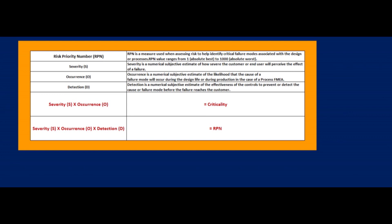Detection is the numerical subjective estimate of the effectiveness of the controls to prevent or detect the cause or failure mode before the failure reaches the customer. Criticality is the multiplication of severity and occurrence. The Risk Priority Number (RPN) is the multiplication of severity, occurrence, and detection.